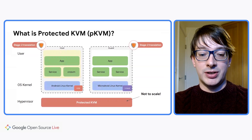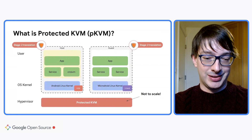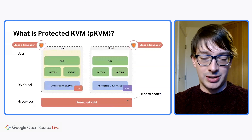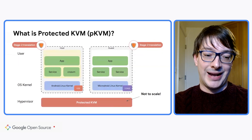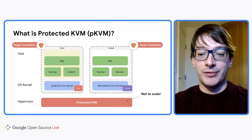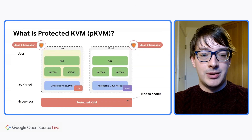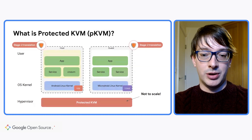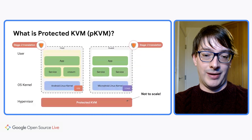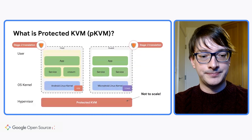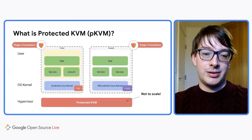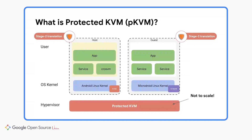Protected KVM is the hypervisor at the bottom — marked 'not to scale' because it's actually very small, about 100 kilobytes of text. It's part of the Linux kernel — it peels off during boot. The crucial thing it does for this confidential environment is install a stage 2 translation around the host and around the guest. The stage 2 translation effectively partitions up the physical memory in the system, saying the host can only access certain pages and the guest can only access certain pages. That's what gives you confidentiality, enforcing ownership and permissions for each page of memory.